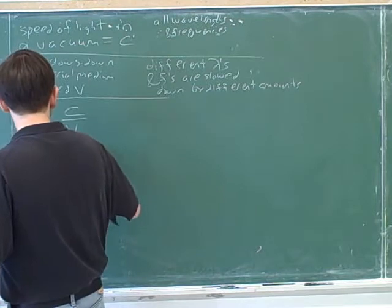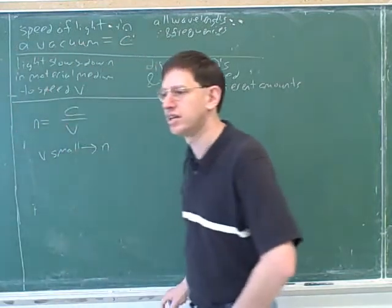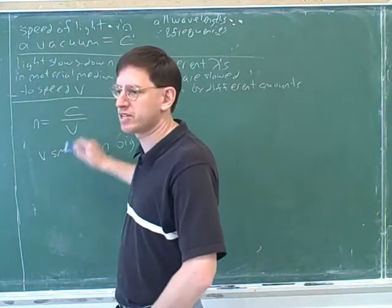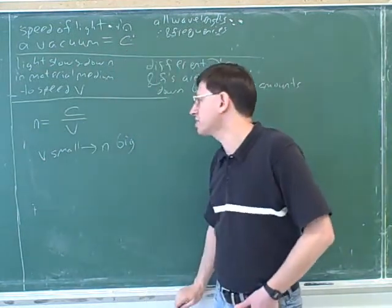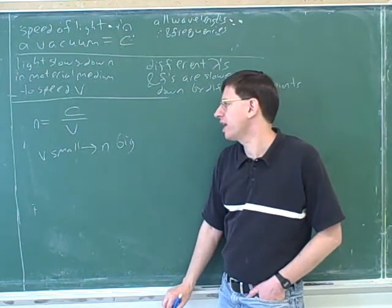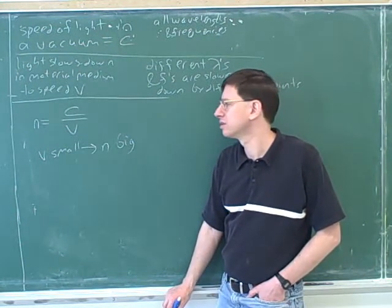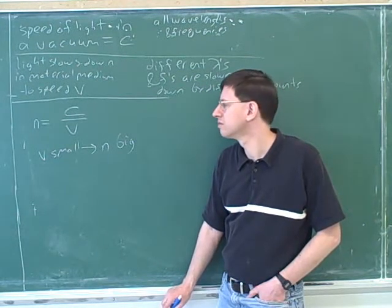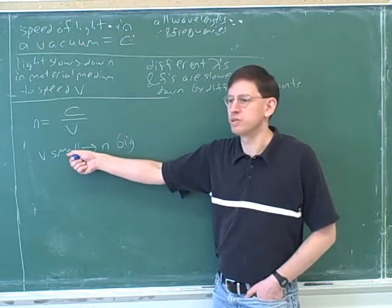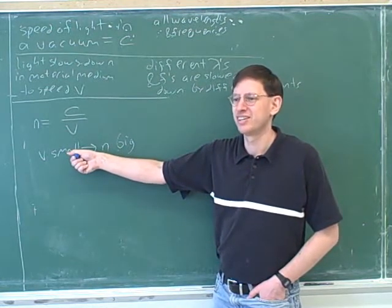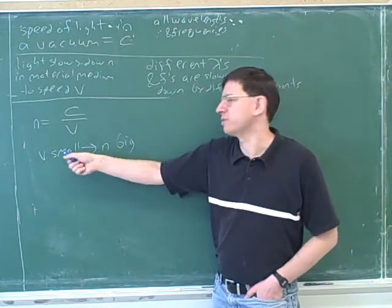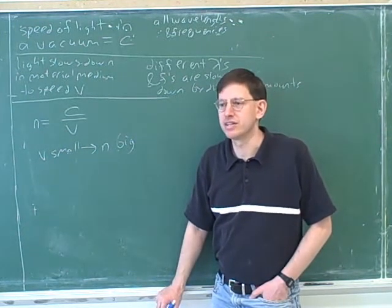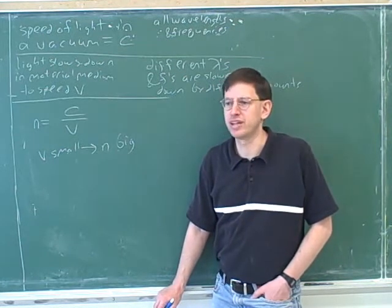Now, suppose that V is small. What impact would that have on N? It would be larger. Because V is in the bottom of this fraction. So does N measure how fast the light is going or how slow it's going? Well, then N would be big when the speed was big. Notice that N is big when V is small. So what does N measure? It measures how much the medium is slowing the light down. The intuitive meaning to N is how much the medium is hampering the light.